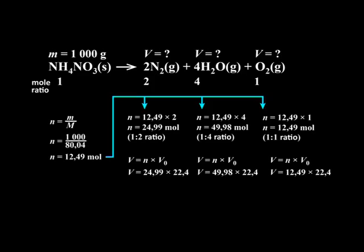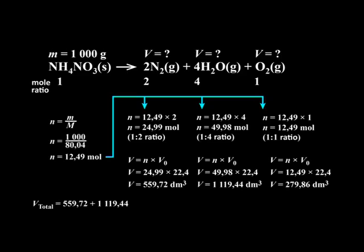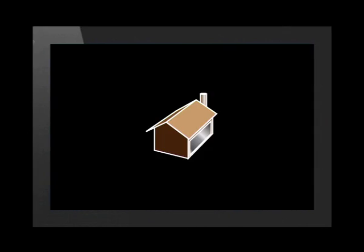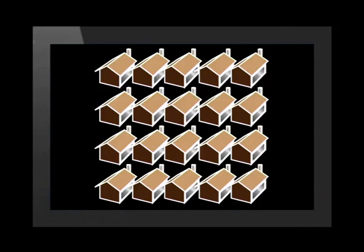Now we use the equation V = n × Vₒ to determine the volume of each of the gases produced. Finally, we add up the total volume of gases to get a total of 1959.02 dm³ of gas produced. As you can see from this calculation, a very large volume of gas is released the instant that the bomb detonates. If you think that a classroom has an average volume of about 100 dm³, a 1 kilogram ammonium nitrate bomb would release an amount of gas equivalent to about 20 classrooms instantly.